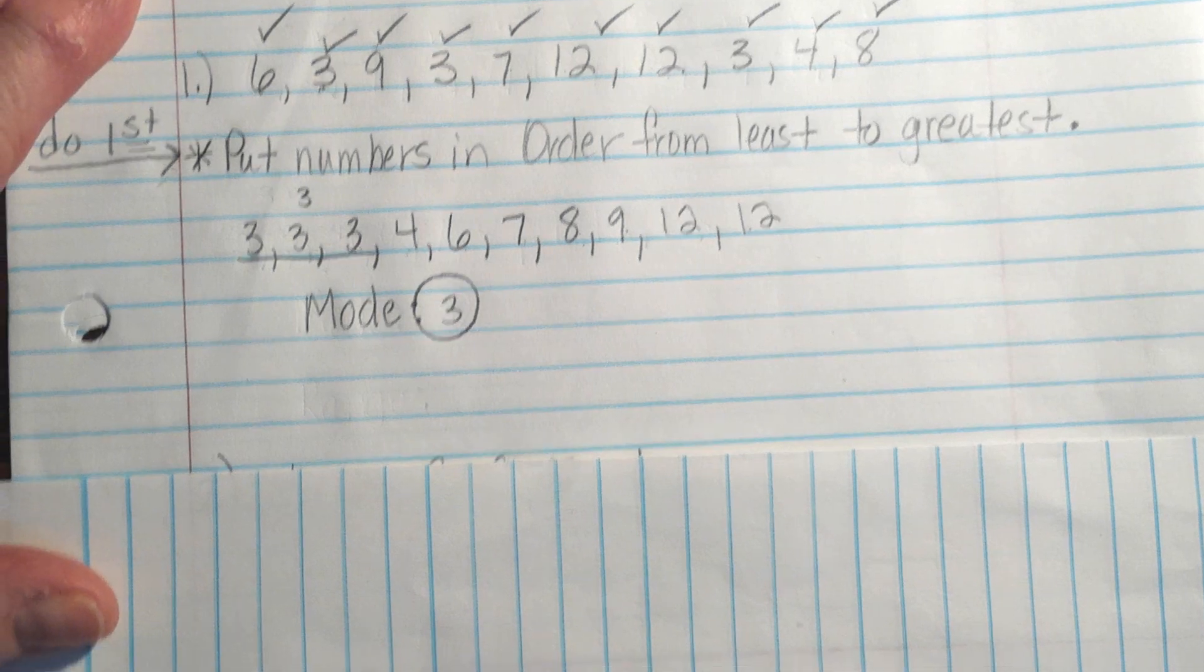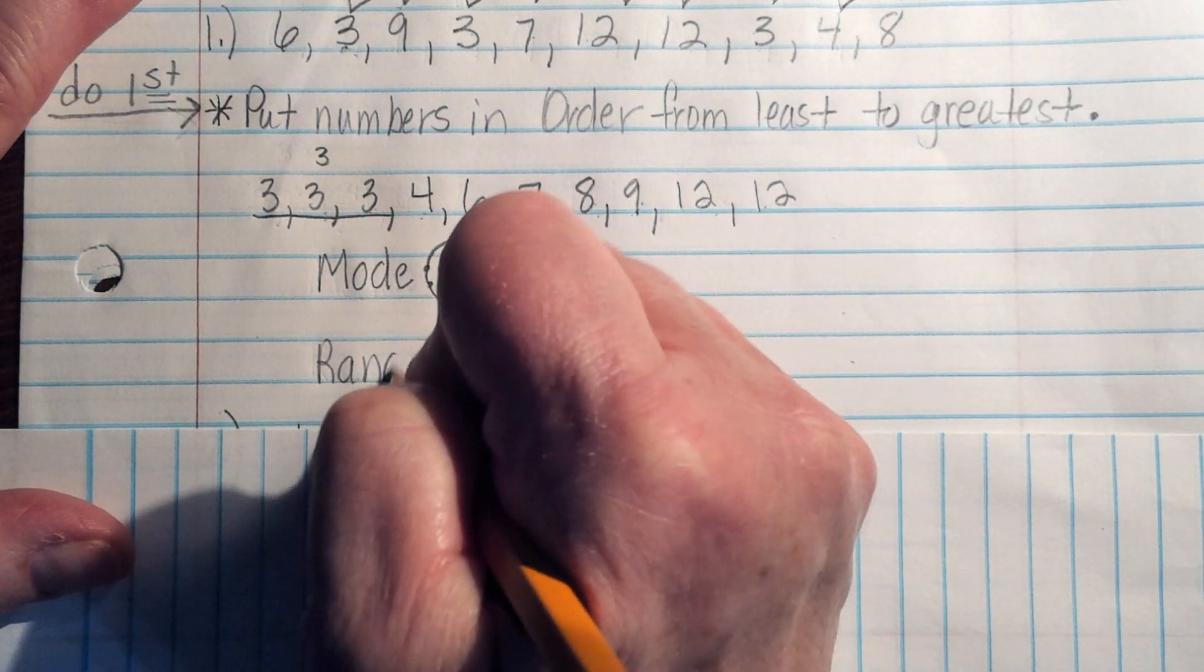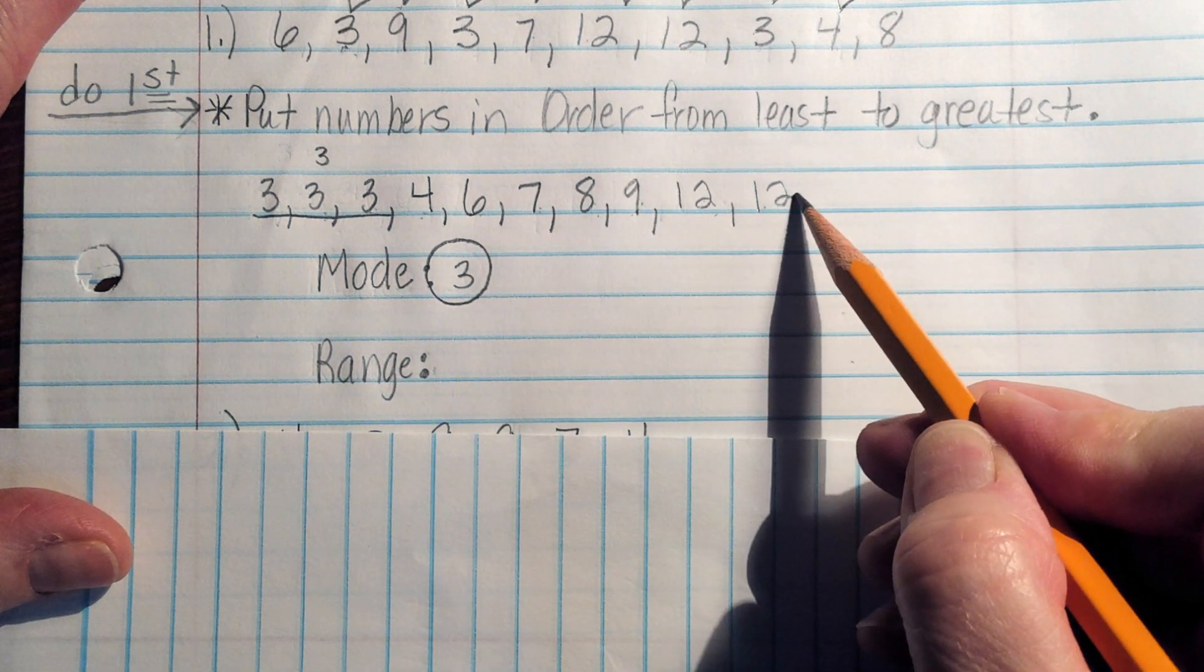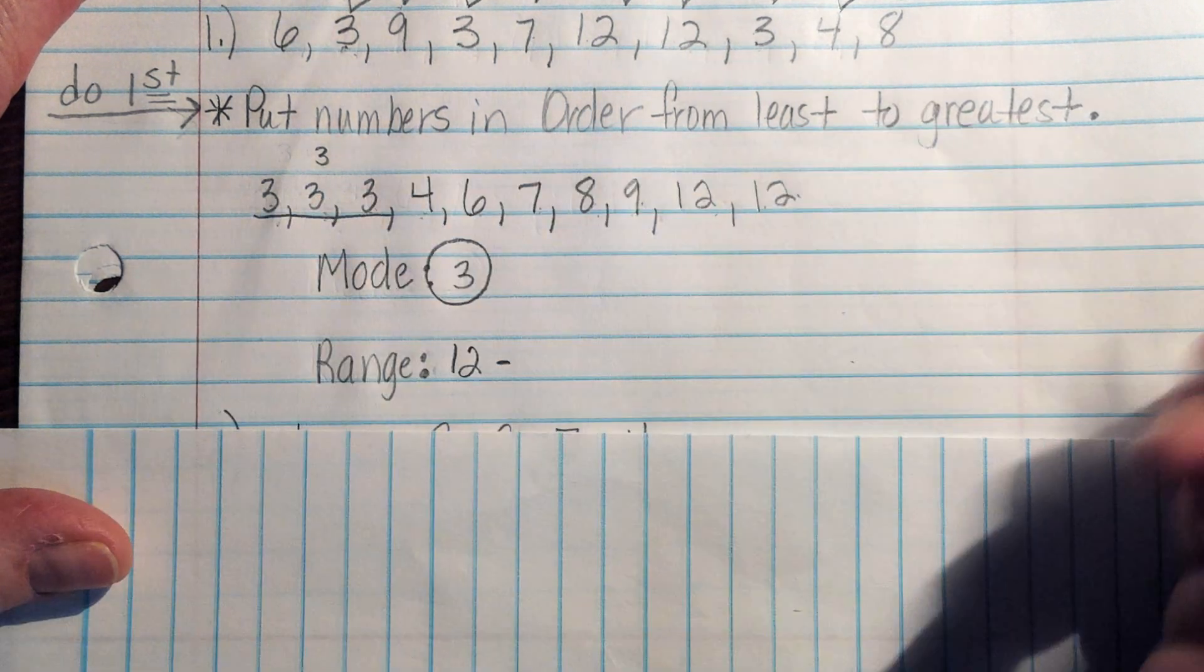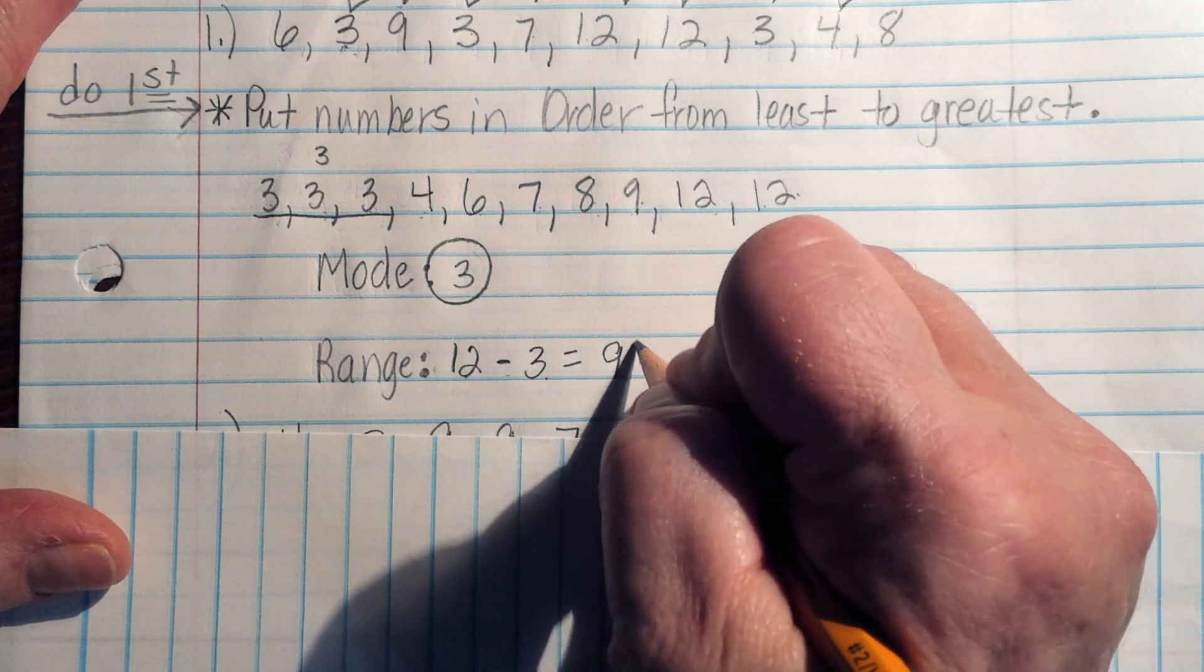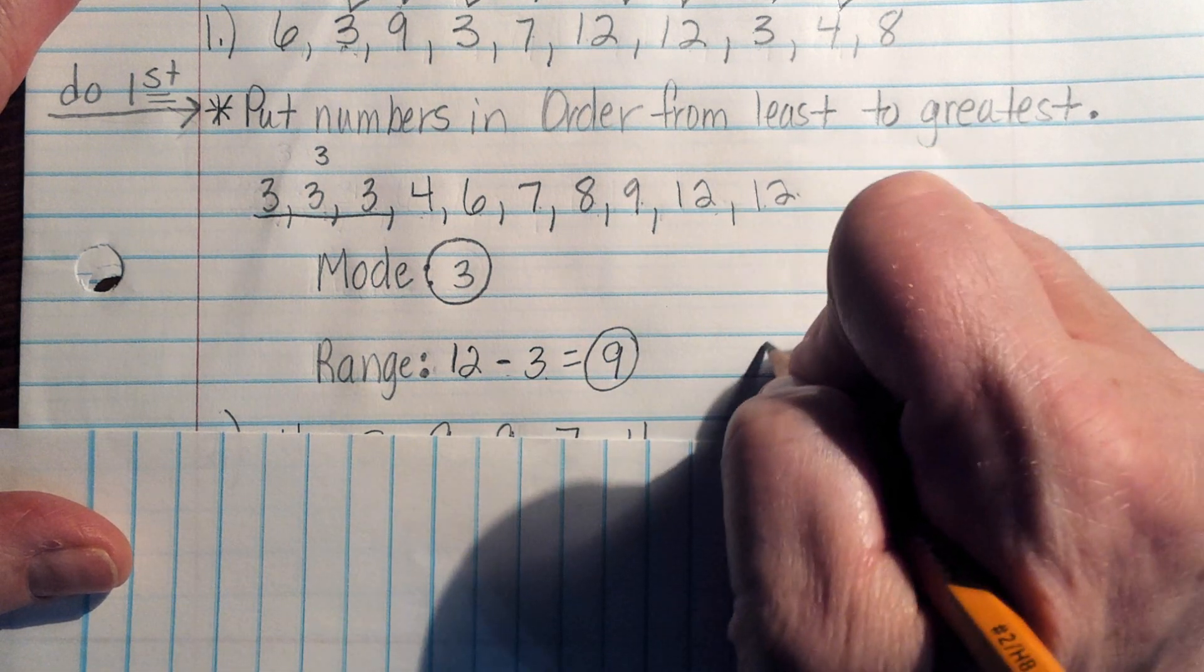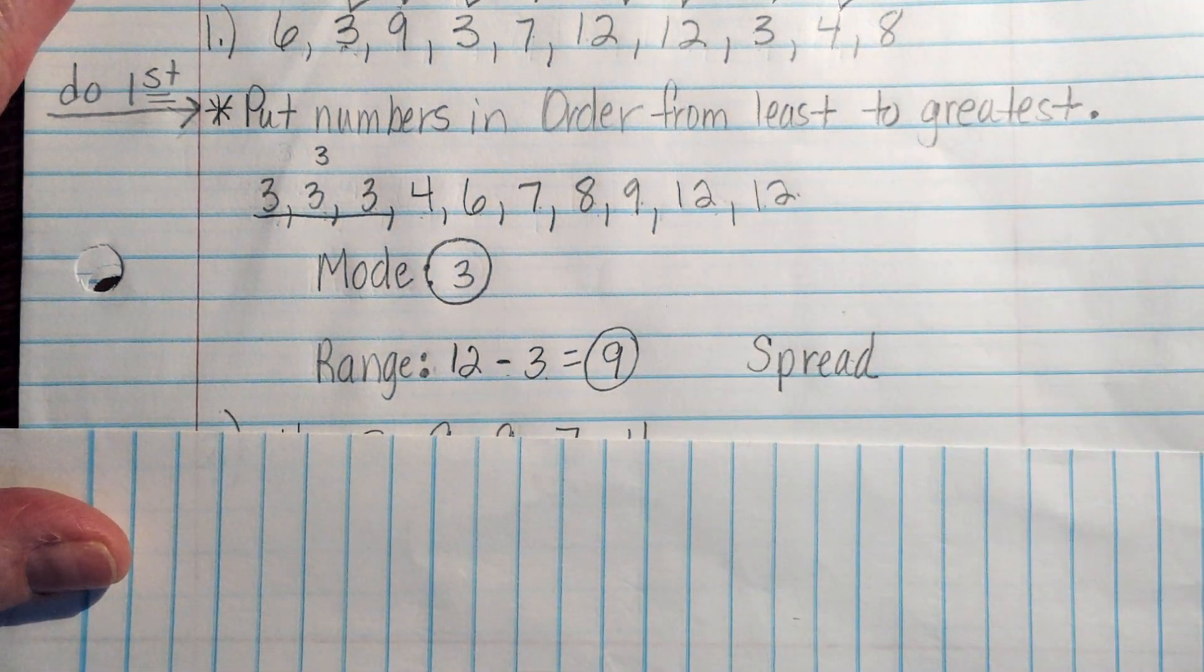Let's take a look at range now. Okay, back in our vocabulary, we said the range was the greatest number minus the least. 12 minus 3 is 9. So the range of our data is 9. This range is also referred to as a spread of data.